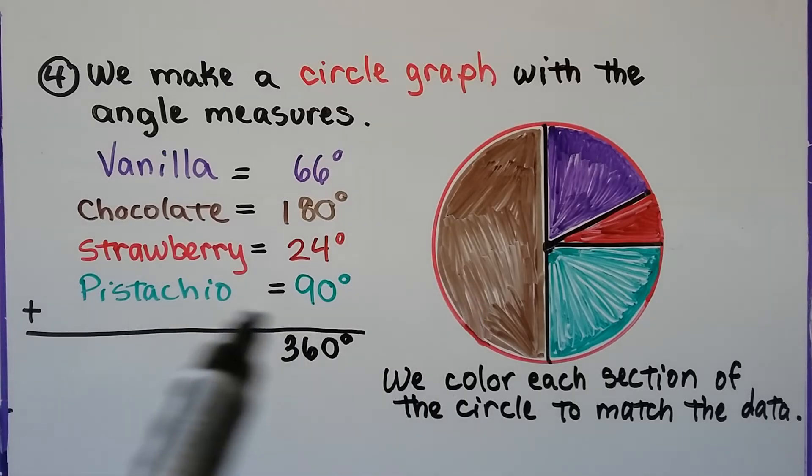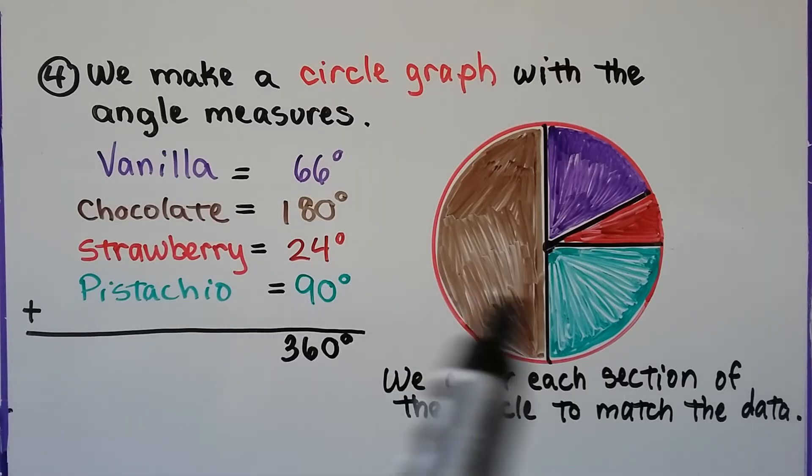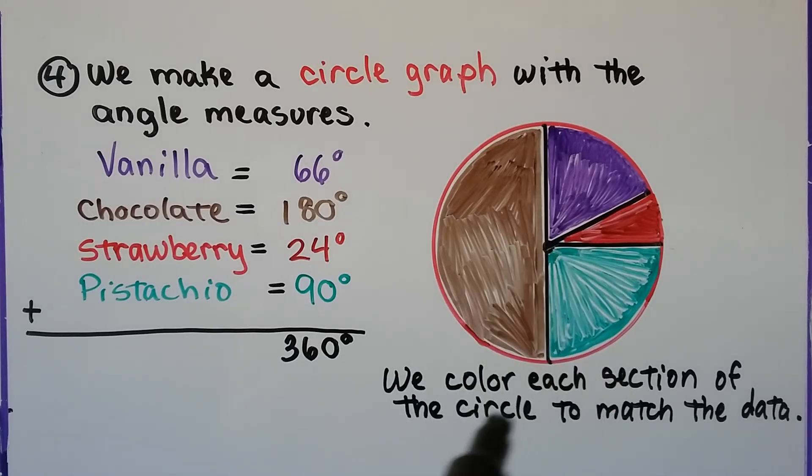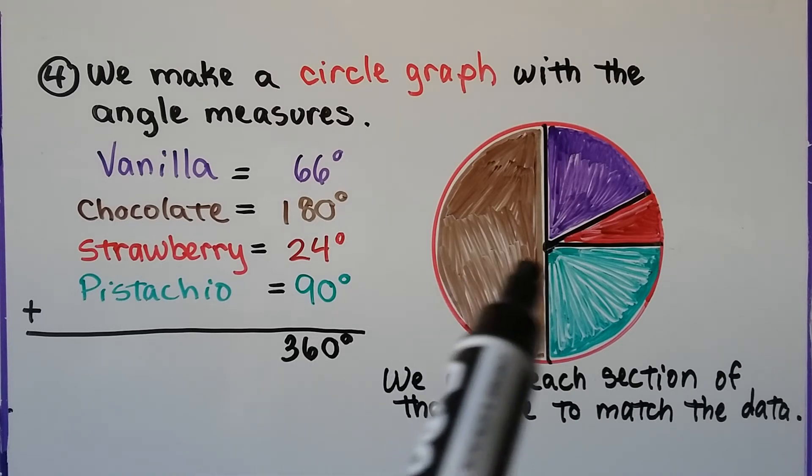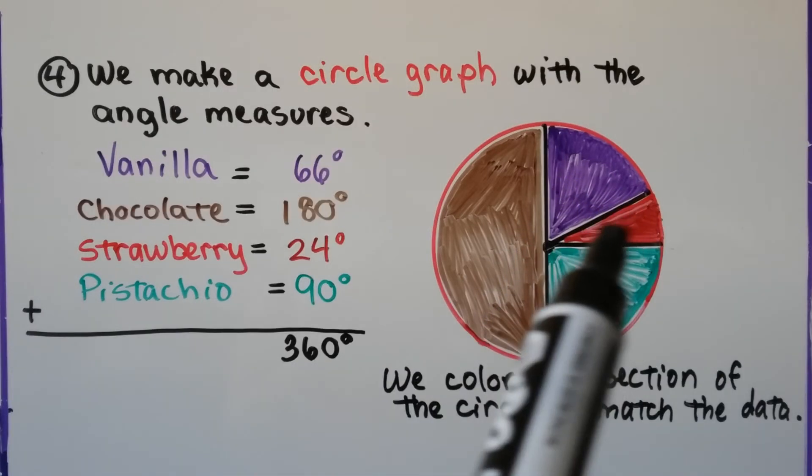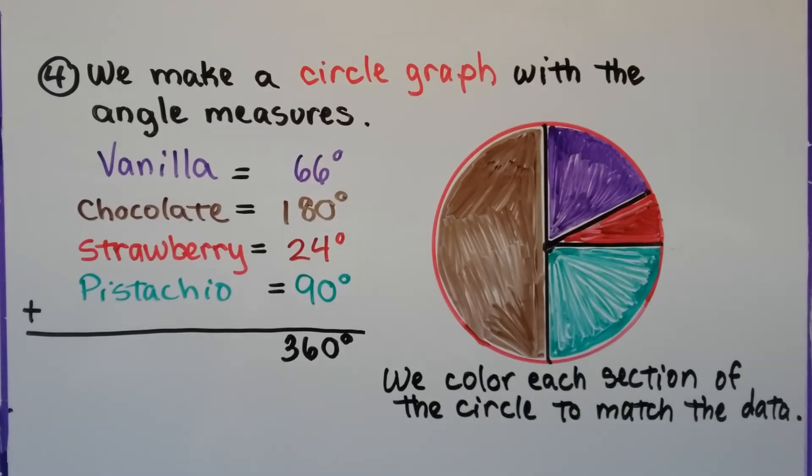The other easy one is pistachio, because 90 degrees would be a fourth. So that would be right here. It's like the corner of a box, isn't it? Then we can use our protractor to mark off what 66 degrees or 24 degrees are, and we have our strawberry and vanilla sections. We color each section of the circle to match the data.